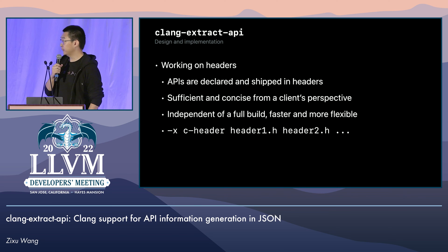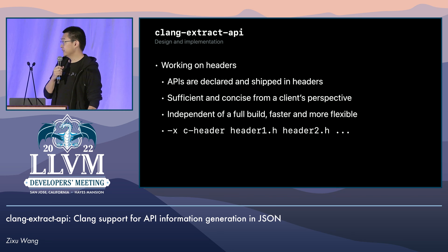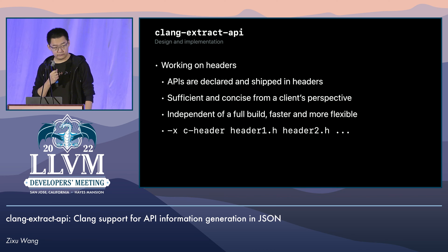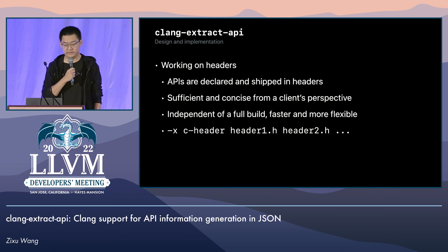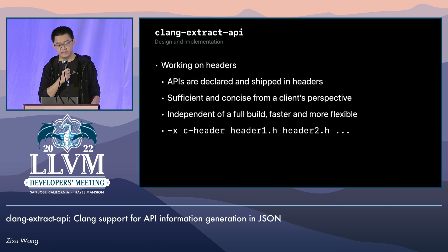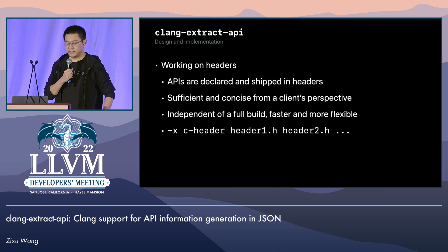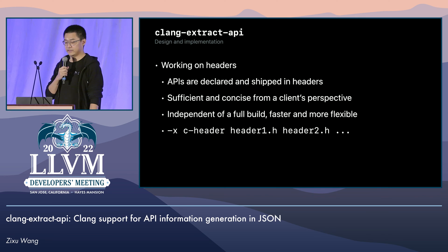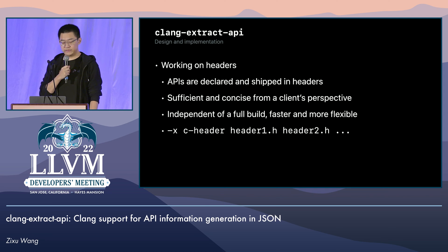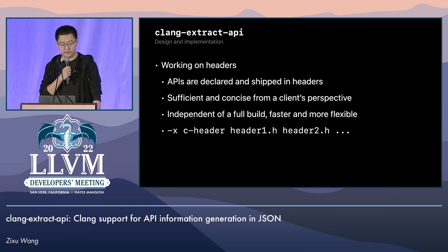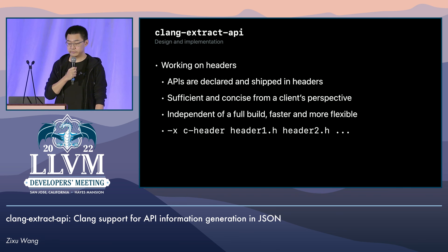Now let's dive into a little bit of detail about implementation and design. Clang-extract-API is designed to only parse headers. If you think about it, the model of APIs in Clang-based languages is that they are declared in headers, shipped in headers, and also consumed in headers. So headers are a sufficient and concise source of the API information that we are interested in. This also makes extract-API flexible and lightweight, because it is independent of a full project build.